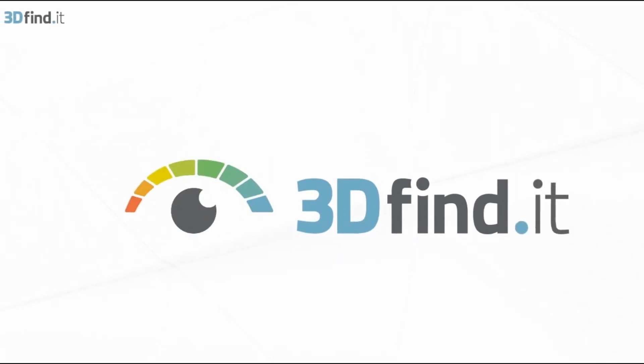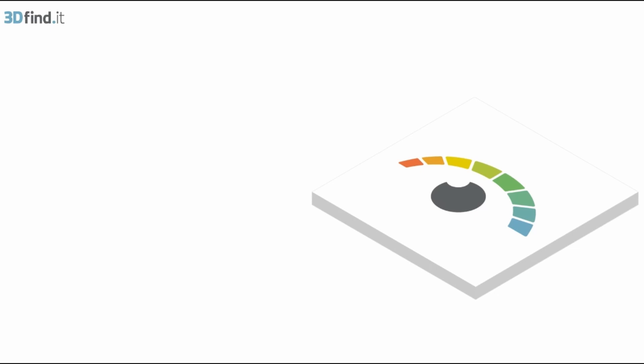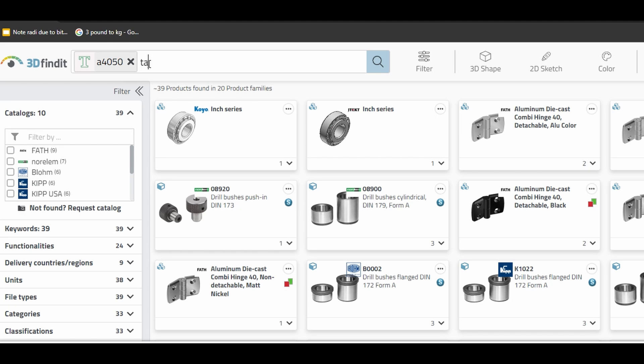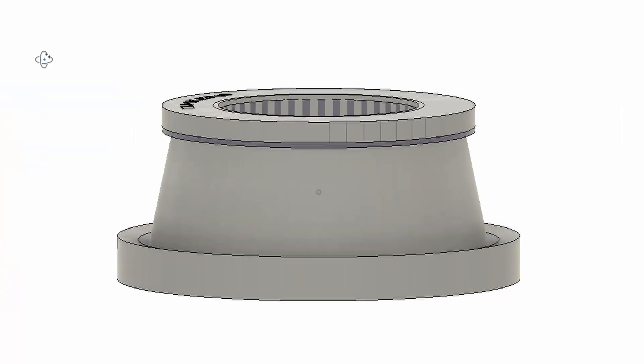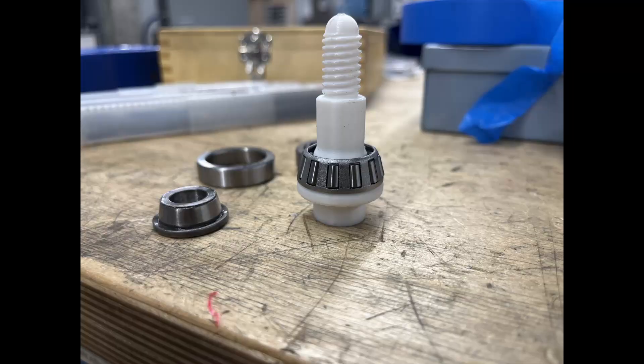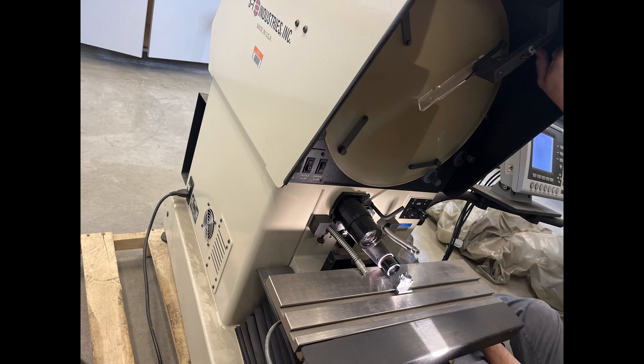3D Find It is one of our sponsors, but they don't even know that I'm putting this in this video. I actually used their service for the first time to get accurate CAD models and confirm that the race was correct. See, there's a bunch of models on the internet for these bearings, and they are all different. With 3D Find It, I was able to download the OEM CAD and confirm that the new design was an exact match with the stock races.